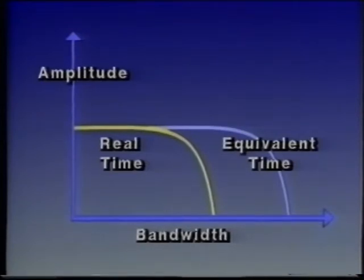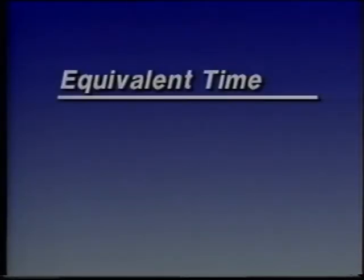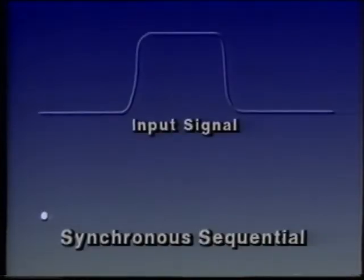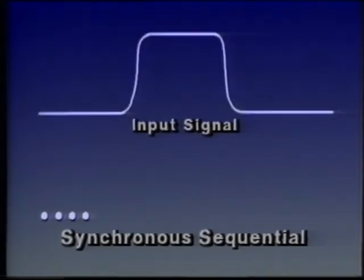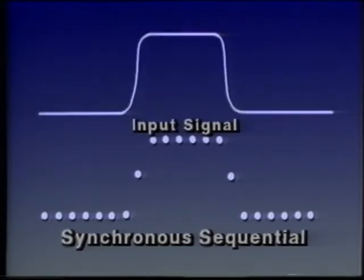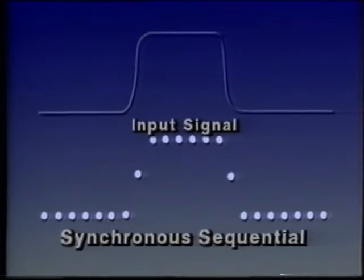Equivalent-time sampling allows DSOs to extend scope bandwidth with repetitive signals. We can use equivalent-time sampling to increase the effective sample rate. It has two major subsections: synchronous sequential sampling and random sampling. Basic synchronous sequential sampling collects one point of information for each acquired signal cycle, with each sample point referenced in time to the trigger point. This process is repeated until enough points are sampled to fill the memory — for example, 1000 acquisitions to fill a 1000-point memory.